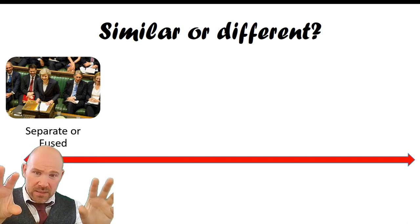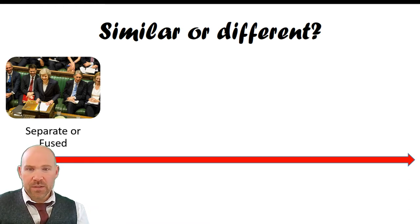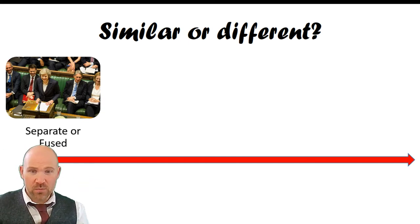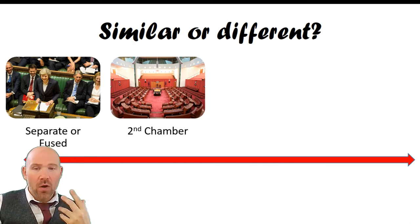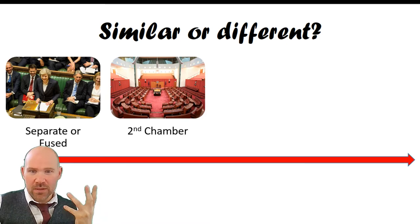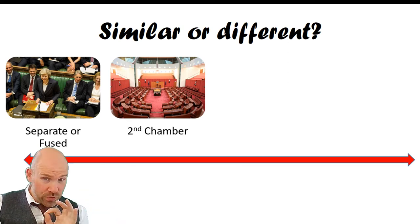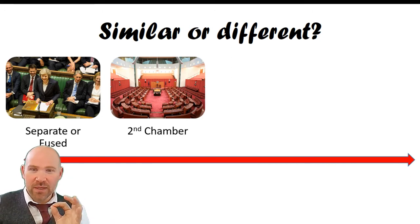That means parliament, most of the time, follows the will of the prime minister and the executive — they're not nearly as independent. When the prime minister with his or her majority goes there and says we're going to do this with tax or education, parliament normally goes along because they have a built-in majority. In America you can get a legislature run by a different party than the president — right now Trump is Republican while the House has a Democrat majority. Brexit is the exception where the executive really has lost control of the legislature, but don't mistake that for normal.